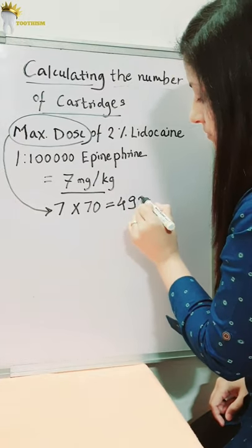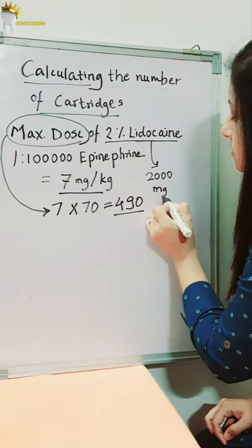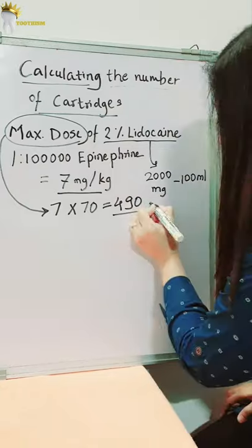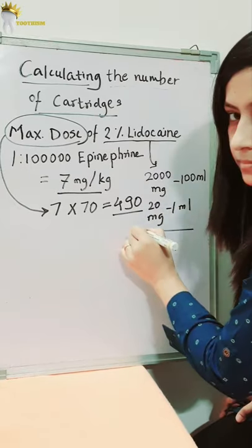2% lidocaine means 2 grams of lidocaine is present in 100 ml of local anesthetic solution. 2 grams means 2000 mg in 100 ml, which is 20 mg in 1 ml.